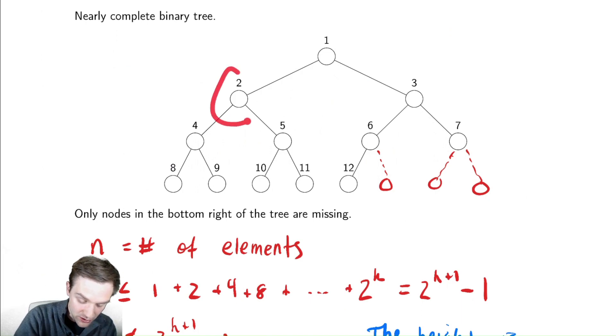So pretend I'm at node two here and I want to find my left child. Notice, four is equal to two times two and then eight is equal to four times two. Six is equal to three times two and twelve is equal to six times two. That's kind of convenient. So the left child will always just be twice the parent.